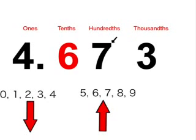Because we are rounding the 6 in the tenths column, we now look at the hundredths. If our number is 0, 1, 2, 3, or 4, we round down.